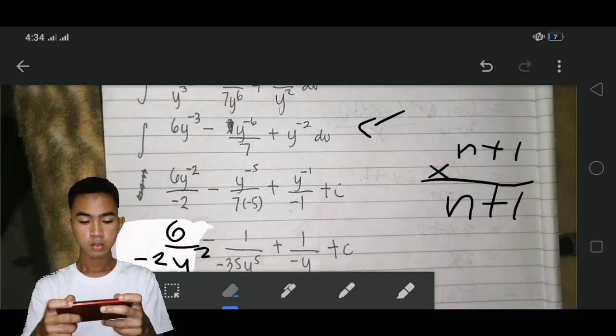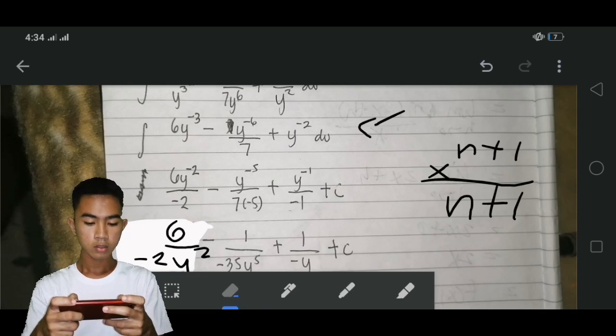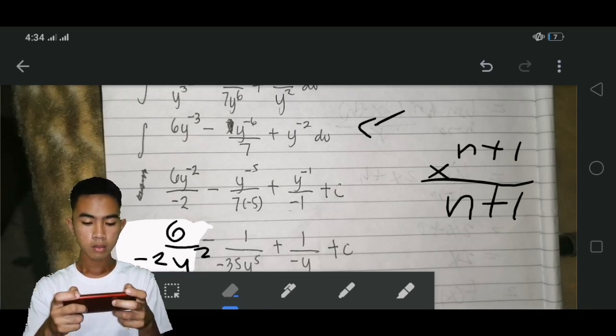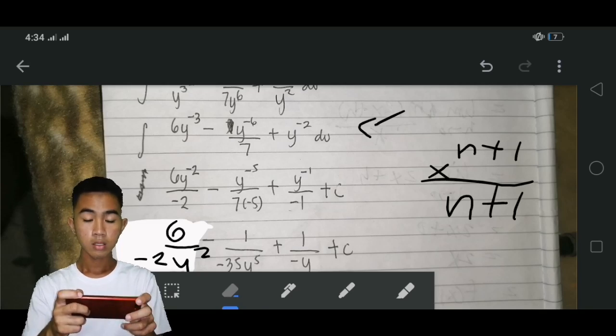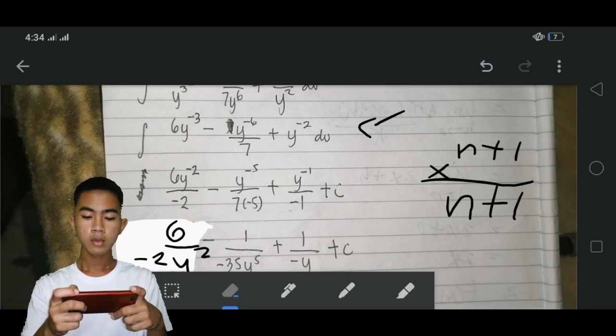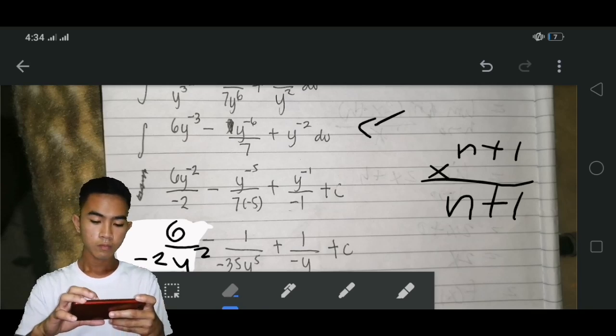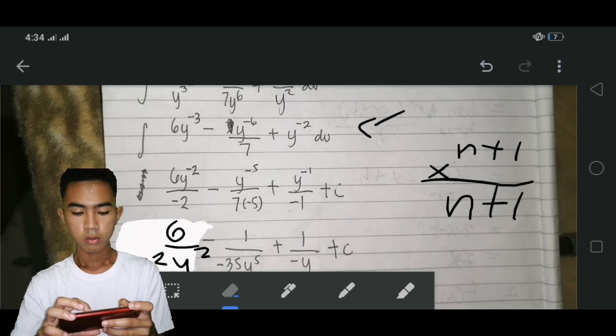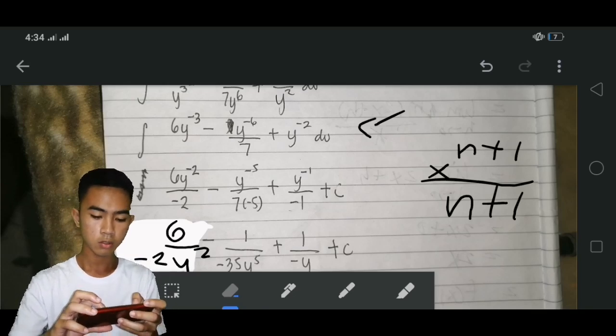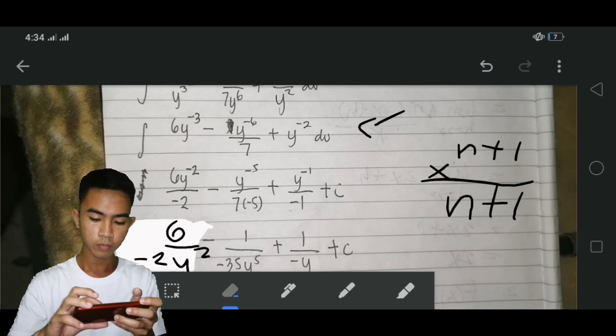6y negative 2 over negative 2 minus y negative 5 over 7 times negative 5 plus y negative 1 over negative 1 plus c. Next, we have to minus the previous exponent to come up in this.